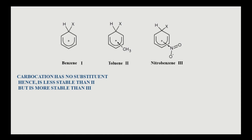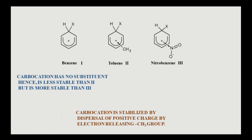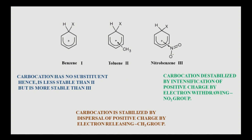Regarding toluene, the carbocation is stabilized by dispersal of positive charge by the electron-releasing methyl group due to its inductive effect. In the case of nitrobenzene, the carbocation is destabilized by intensification of positive charge by the electron-withdrawing nitro group. That's why the rate of reaction will be greater in toluene than in benzene, and least in nitrobenzene.